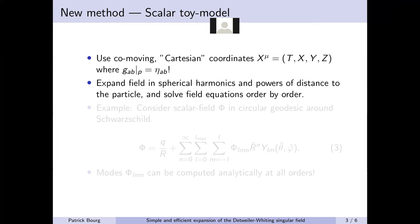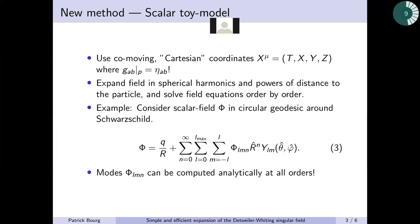For example, I implemented this idea for the scalar fields in circular geodesics around Schwarzschild. It turns out that doing it like that, you can compute the modes of your scalar field order by order at all orders analytically.